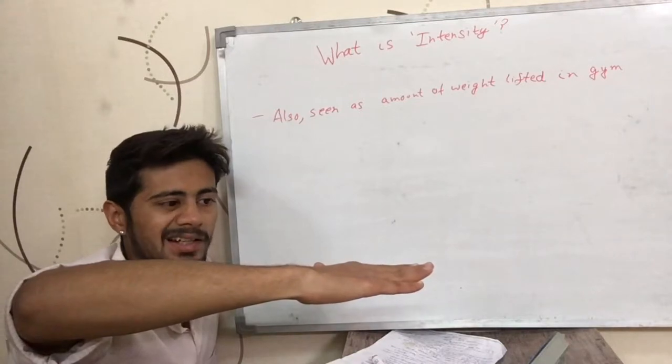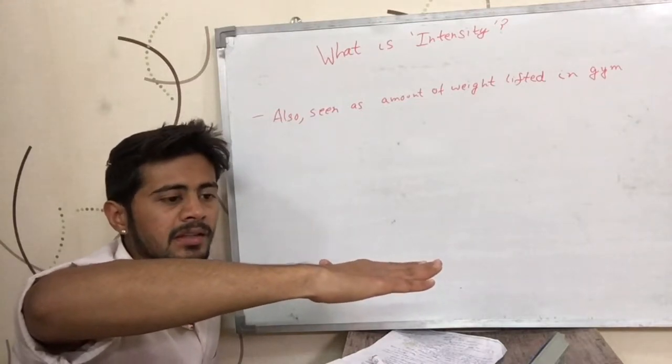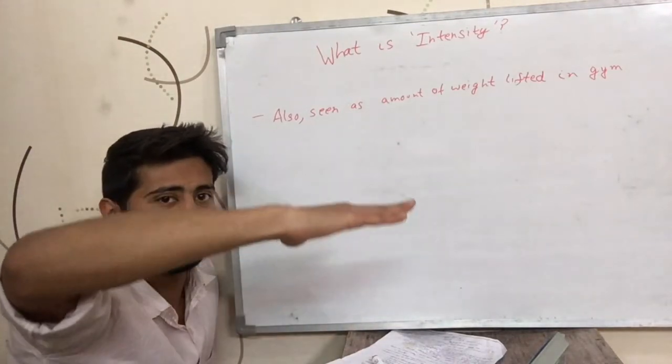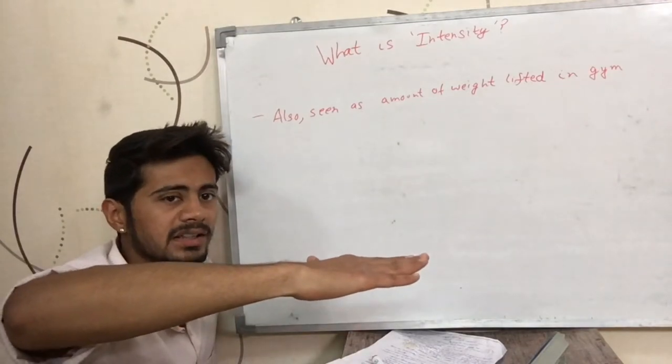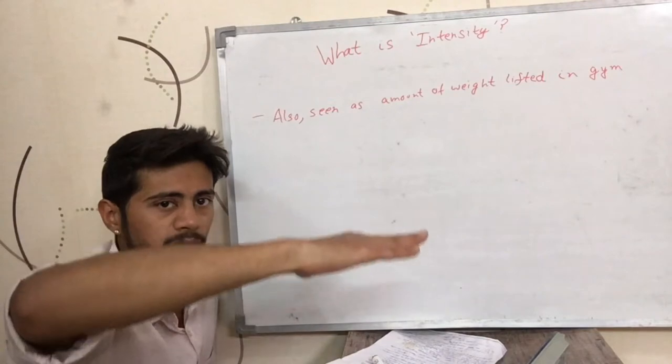Let's say when I started my hand was stationary. So I will say that the intensity is kind of zero. Now I am moving my hand. So this intensity is more than the intensity when it was stationary.